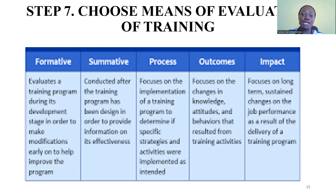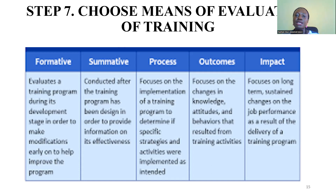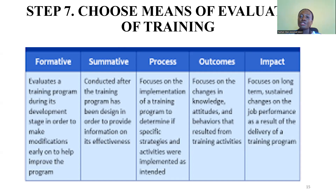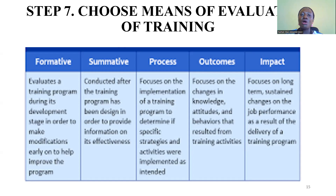Process evaluation checks what you planned to do and whether you were able to do it. Outcomes evaluation focuses on changes in knowledge, attitudes, and behavior — these people came in with a particular mindset, and after the training, what change has come? Impact evaluation has to do with long-term, sustained changes on job performance as a result of the training delivery. If behavior has changed, it should reflect in sales, production, and overall performance.